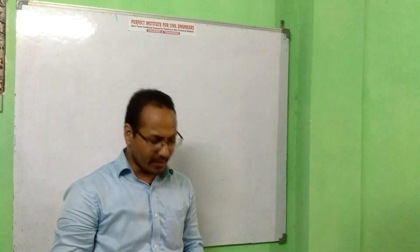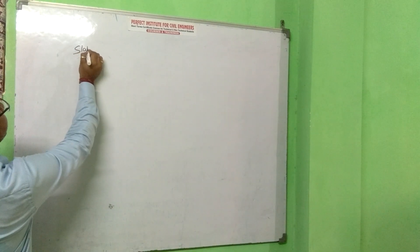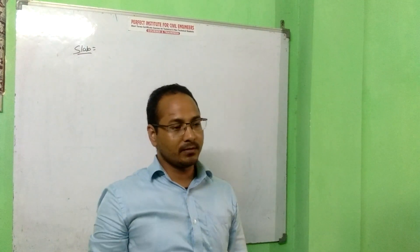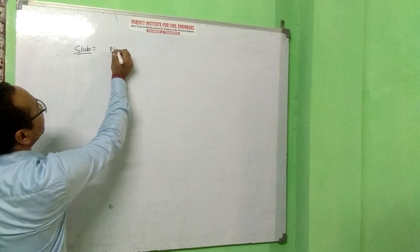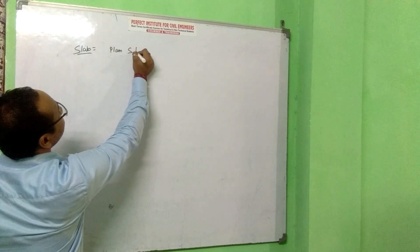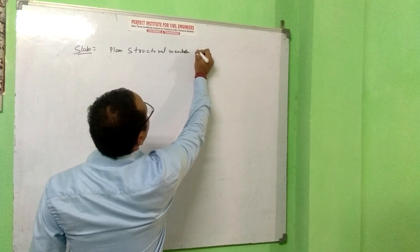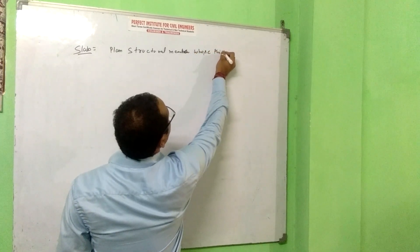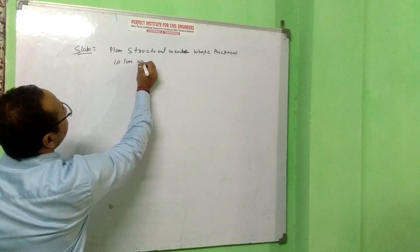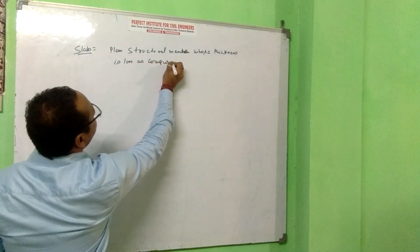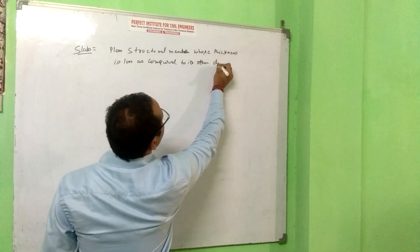About the type of slabs. Type of slab. First of all, what is slab? How to define slab? See, slab is a plane structural member whose thickness is less as compared to its other dimensions.